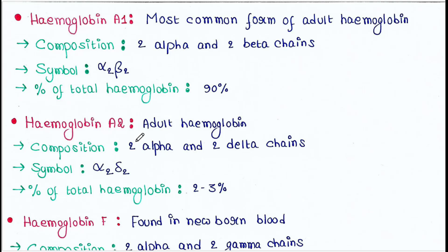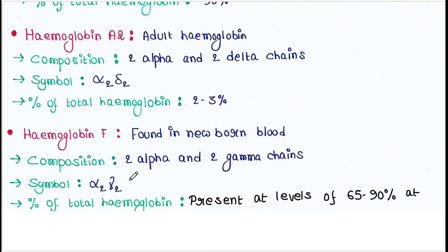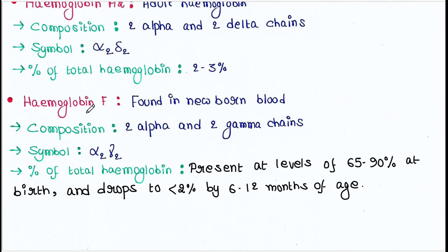Hemoglobin A2 is also an adult hemoglobin, but its percentage in our blood is very low — 2 to 3 percent. Its composition has two alpha and two delta chains, so the symbol is alpha-2 delta-2. Hemoglobin F — where F indicates fetal hemoglobin — is found in newborn blood.